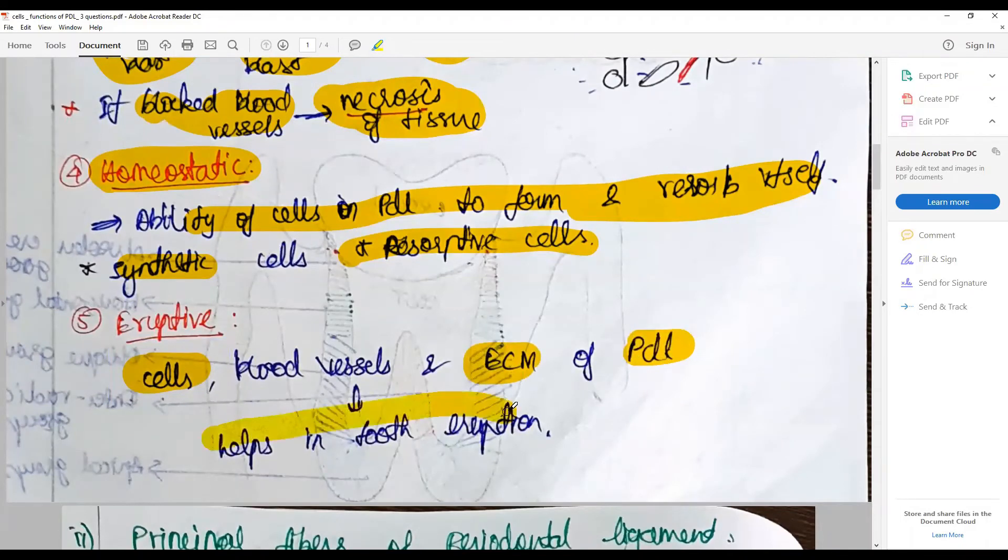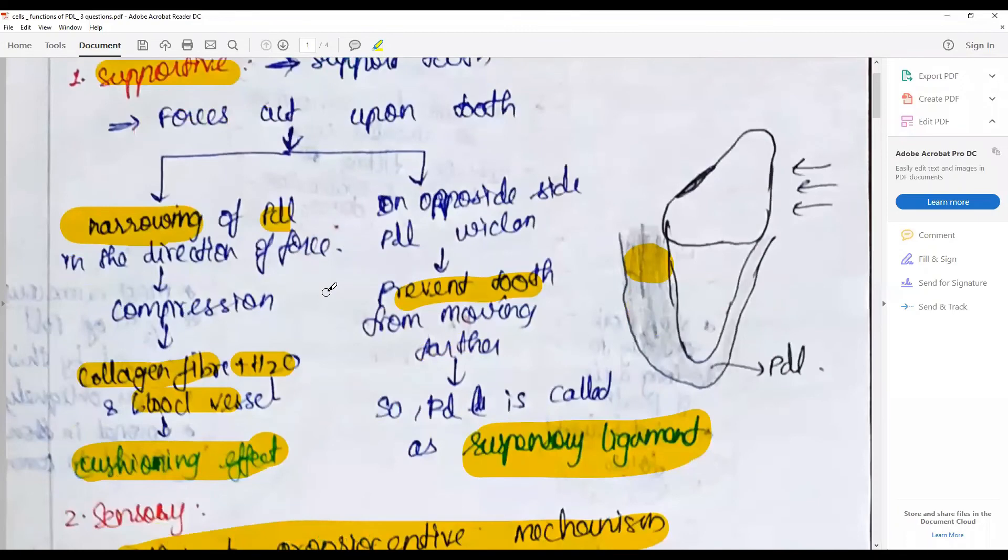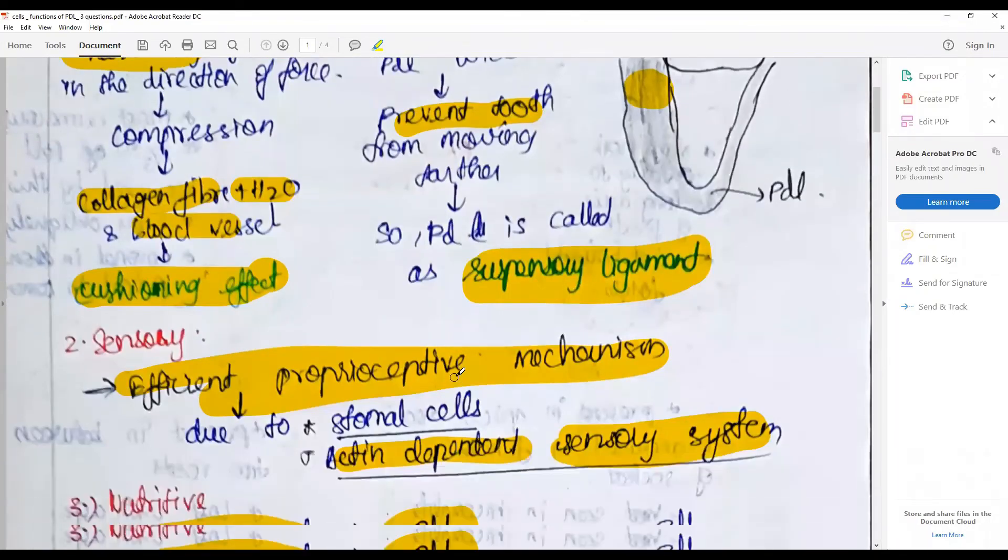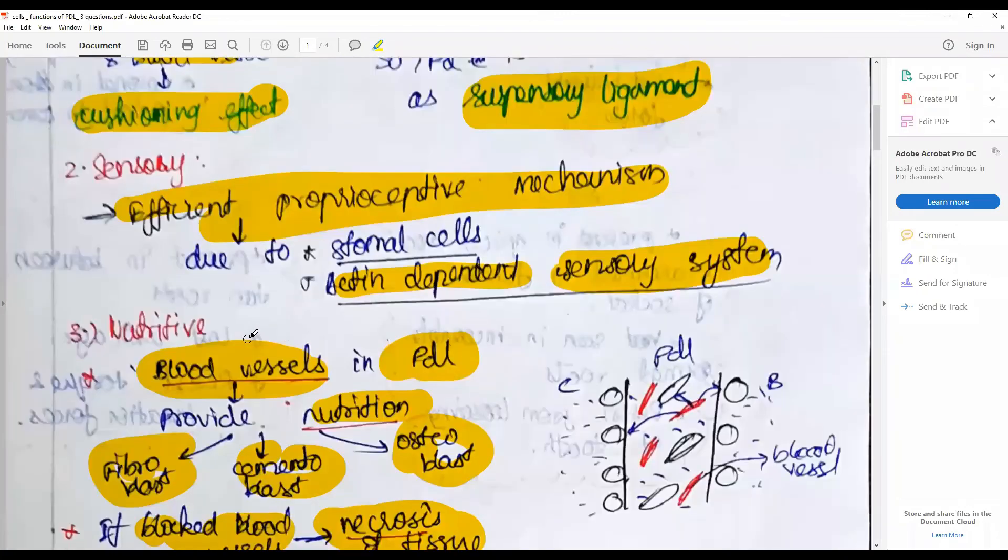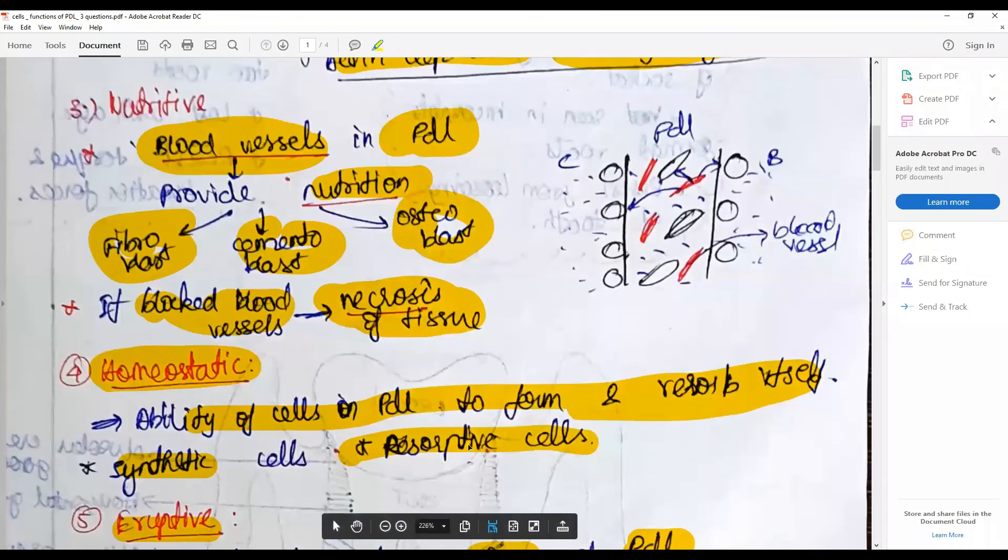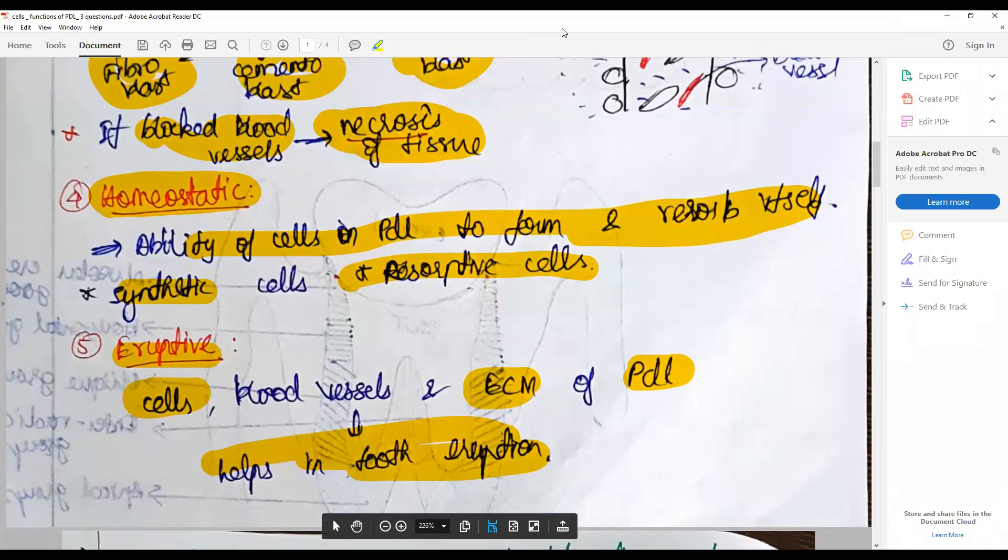So the five functions are: supportive via the cushioning effect and the suspensory ligament; sensory via the proprioception receptors; nutritive via the blood vessels; homeostatic by synthetic cells and resorptive cells; and eruptive. That brings us to an end on the discussion on the functions of periodontal ligament.